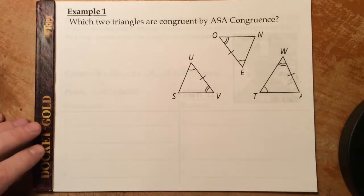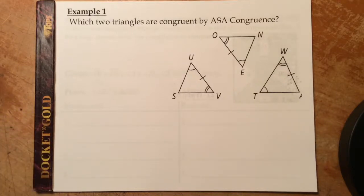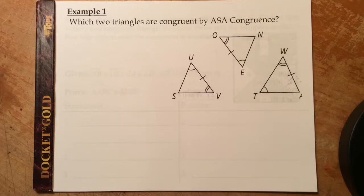These are examples from section 4-3: the angle-side-angle and angle-angle-side postulate and theorem, and CPCTC for congruent triangles.